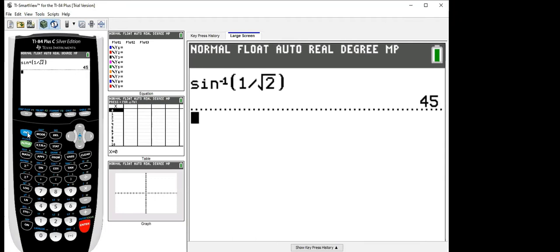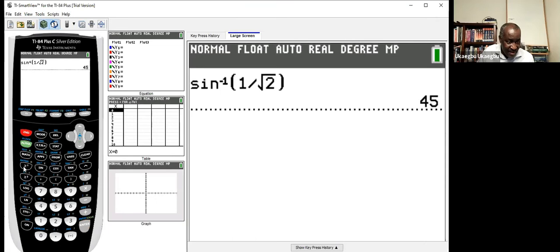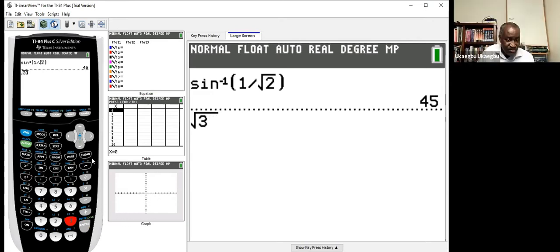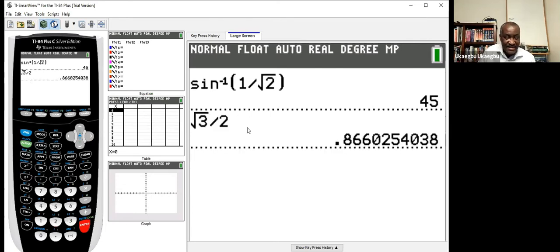Okay, so you must press second function and then you press X square and type your number. And then you move out of the square root sign, unless you want to type something else. So now if you're dividing, then you can now divide, like divide by two and you hit your enter. So if you're doing it directly, you can now do, you see the value right now?